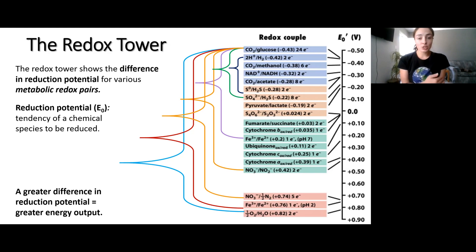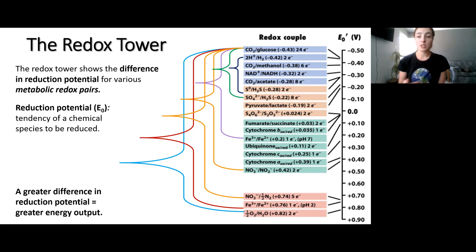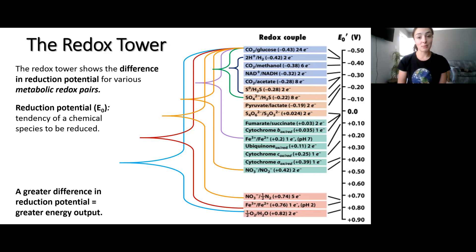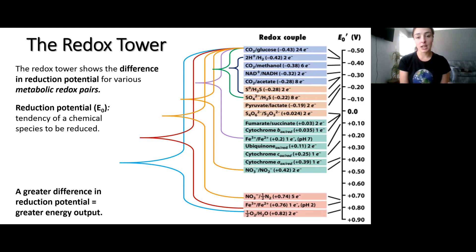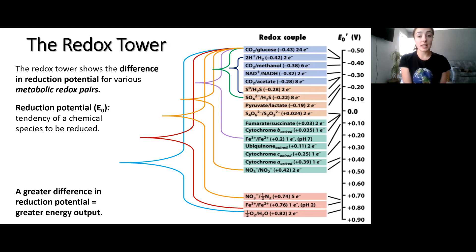This is because the electron donor donates its electrons to the other species, so it becomes oxidized — it has a greater oxidation potential and a lower reduction potential, meaning it's more negative on the E value. The electron acceptor has a higher reduction potential because it wants to accept electrons and become reduced. For example, oxygen is at the bottom of this tower — it's a really good electron acceptor because it has such high reduction potential. The difference in overall reduction potential between electron donor and acceptor determines how much energy you get out of that metabolic pathway.